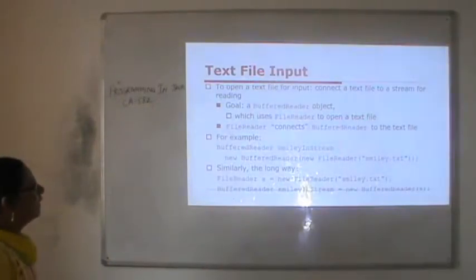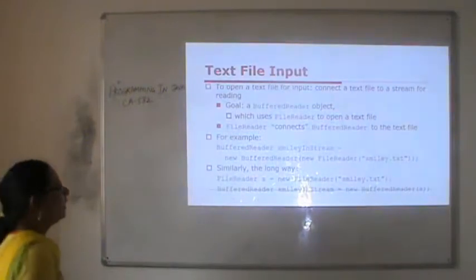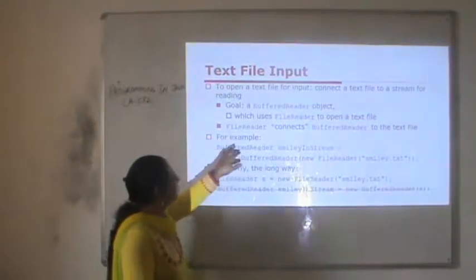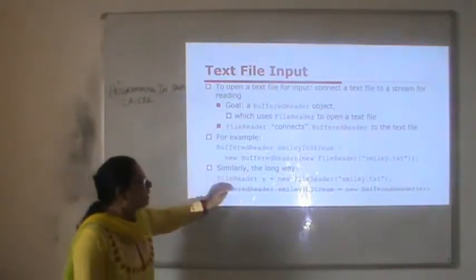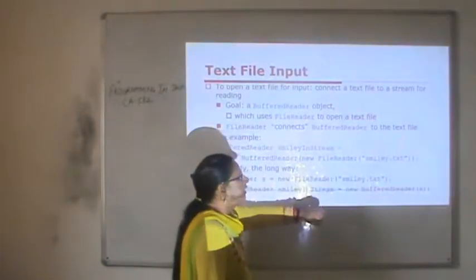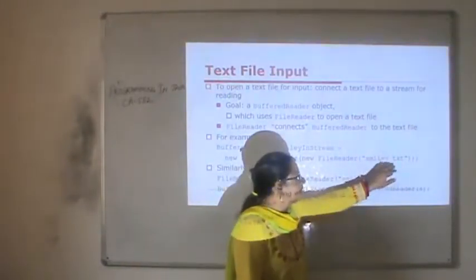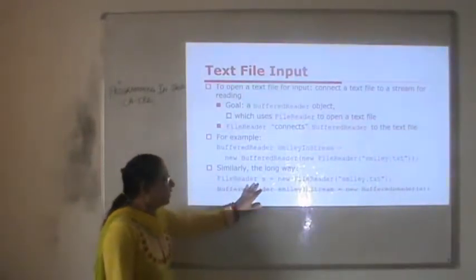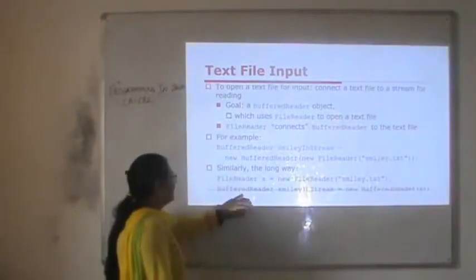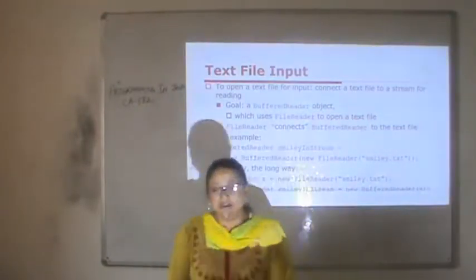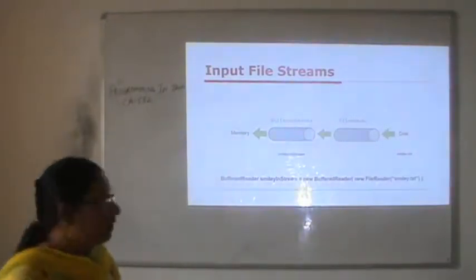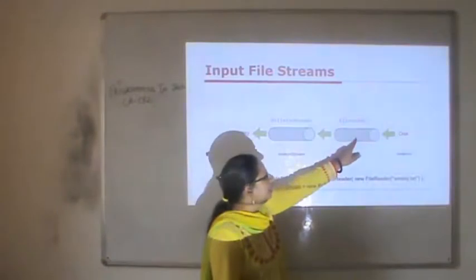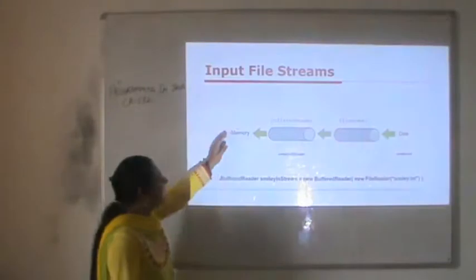Text file input: to open a text file for input, connect a text file to a stream for reading. BufferedReader and FileReader are the classes used — FileReader connects BufferedReader to the text file. We create an instance of BufferedReader and pass an instance of FileReader in its constructor, specifying the file name with extension. We can also do this in two steps: first create a FileReader instance with the file name, then pass it to the BufferedReader constructor. FileReader connects to the disk, and its instance is passed to BufferedReader so it can be connected to the program.